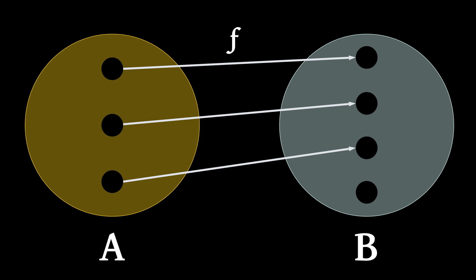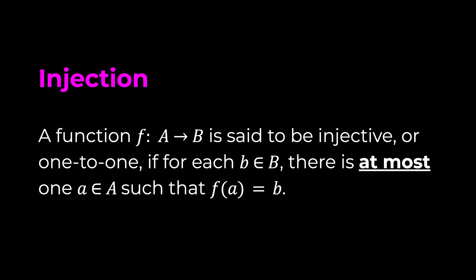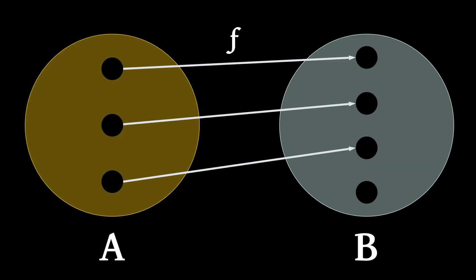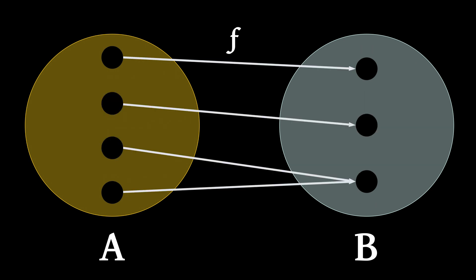The fact that not all elements in set B are mapped doesn't mean the function is not injective. Remember, the definition of injection states that for each b in B there is at most one a in A such that f(a) equals b, which allows for an element in set B to have no mapping. However, this next function is not injective because two elements in set A are being mapped to the same element in set B, which is not allowed under injection.